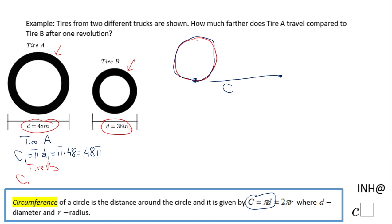I'm going to call that C₂, and that will be π times d₂, which is 36. We have π times 36, which is 36π. And for finding how much further does Tire A travel, we just have to do a difference.